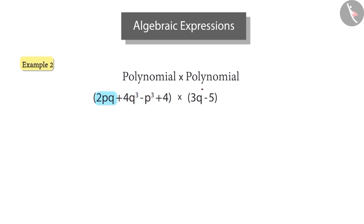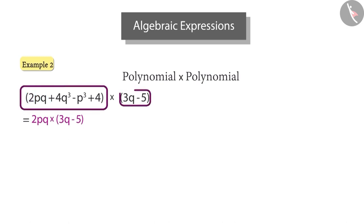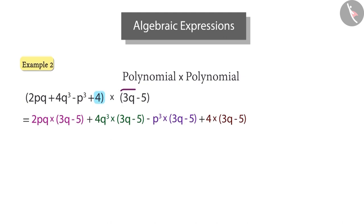Every term of this expression will be multiplied with this binomial. Let's multiply the first term with that. This would be equal to the multiplication of 2pq and 3q minus 5. Thus, we multiply all terms by binomial. Next, 4q cube multiplied by 3q minus 5. After that, we multiply next p cube and 3q minus 5 and finally 4 and 3q minus 5.